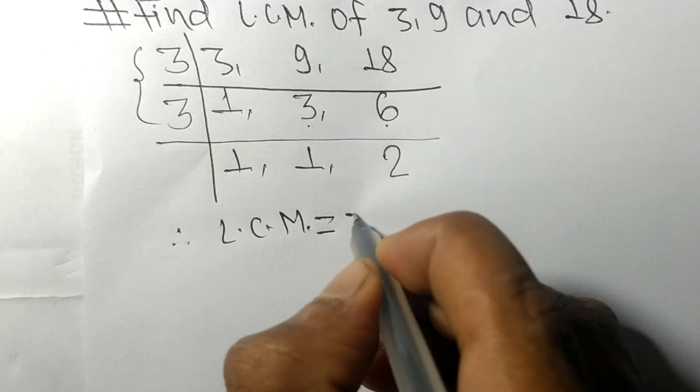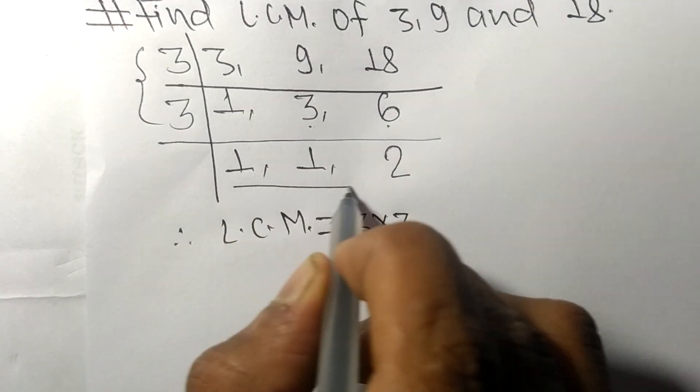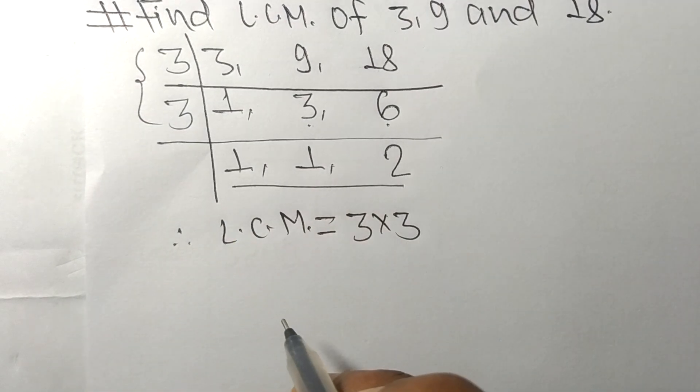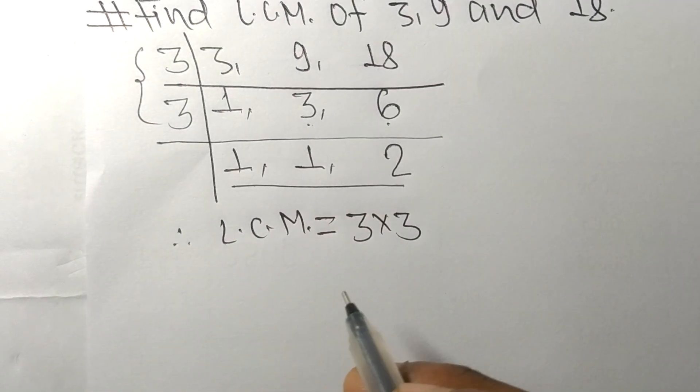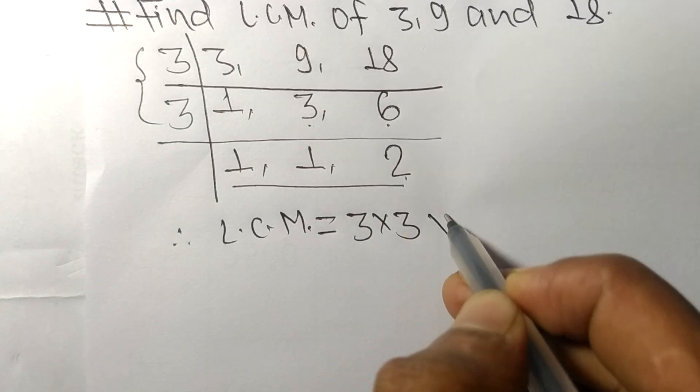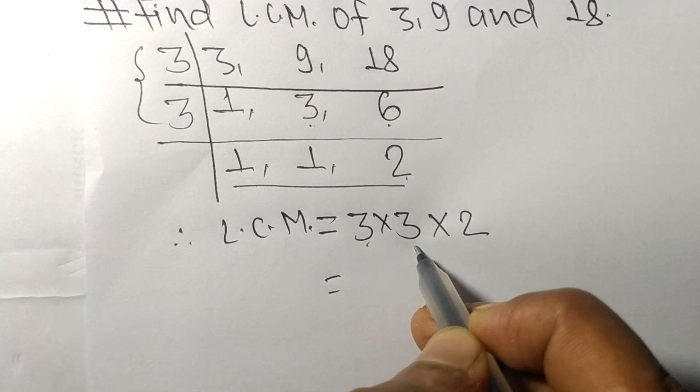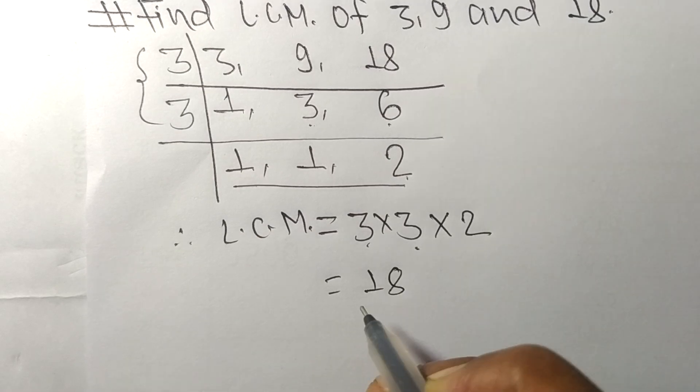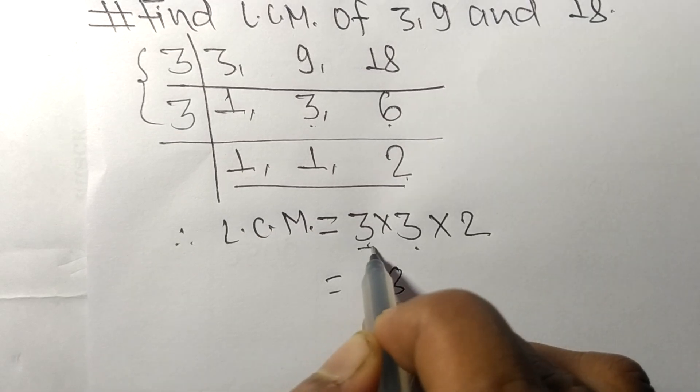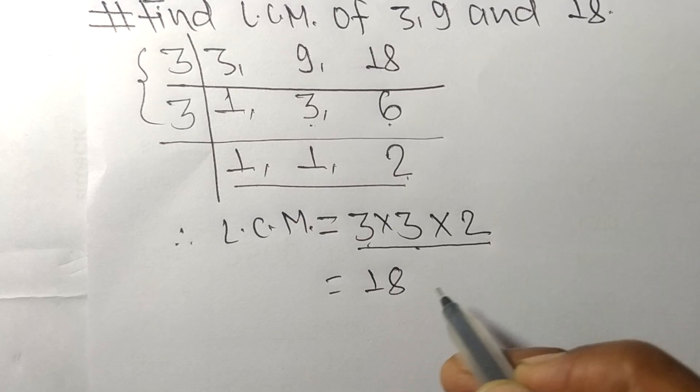From this side it is 3 times 3. From this side we choose the numbers greater than 1, that is 2. So 3 times 3 means 9, 9 times 2 means 18.